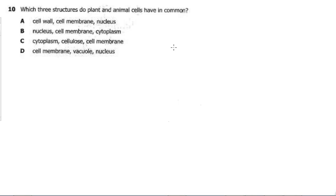The key points to remember: the three structures common in both animal and plant cells are the cell membrane, the cytoplasm, and the nucleus. The cell wall is restricted to only plant cells. The vacuole is restricted to only plant cells. Cellulose is found in plant cells as well. So the three structures common in both animal and plant cells are cell membrane, cytoplasm, and nucleus — and according to our answers, that is option B.